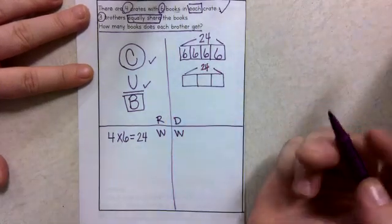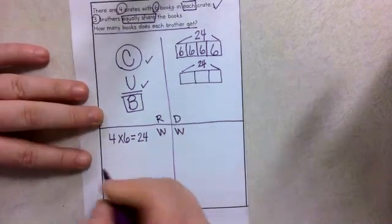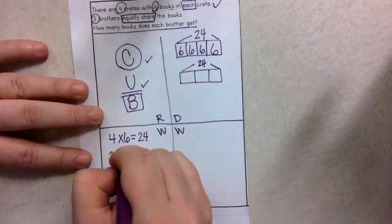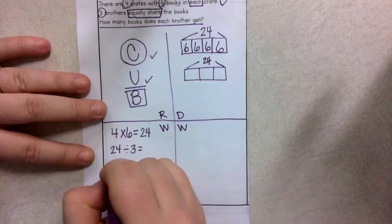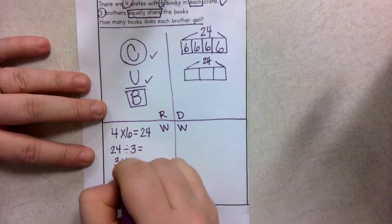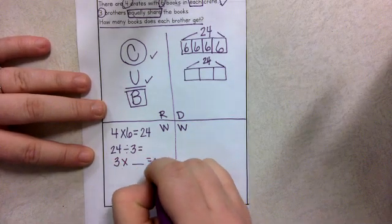Can I write an equation for this? Yeah, I could write 24 divided by 3. If I don't know my division facts very well, I could ask myself 3 times what equals 24?